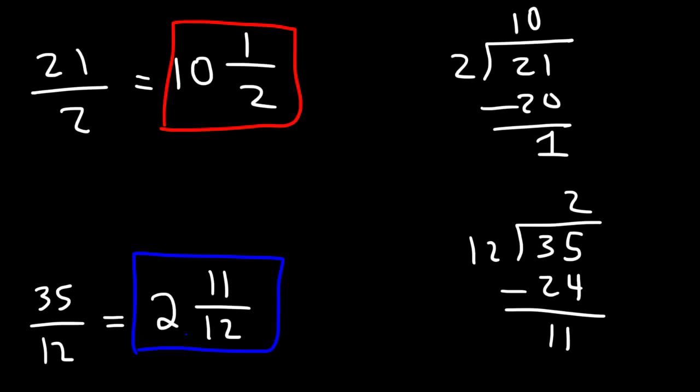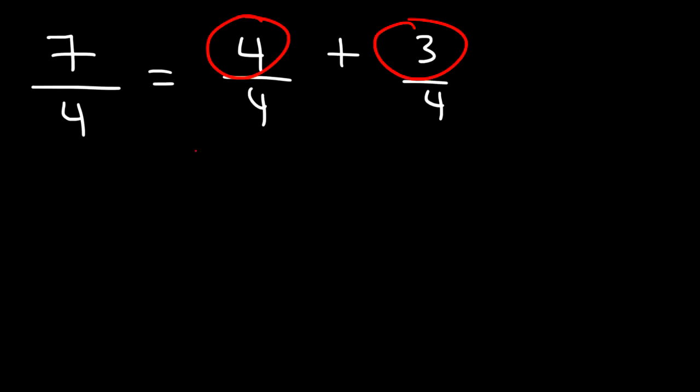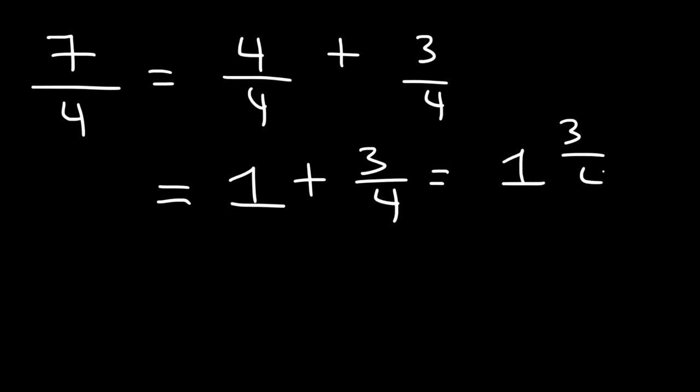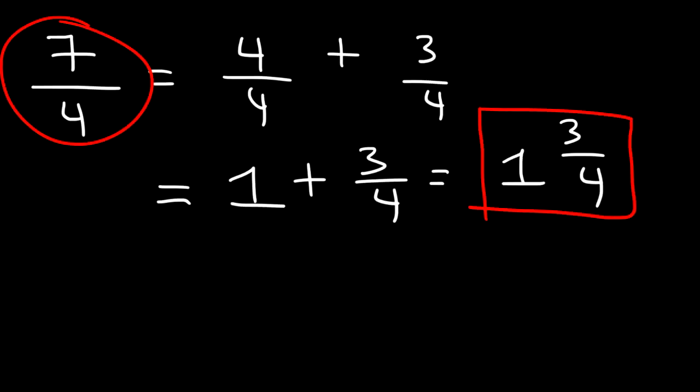Now let's get these same answers using another technique. Let's start with 7 over 4. What I like to do is break down 7 into two numbers, one of which is divisible by 4. So 7 is 4 plus 3. The denominator has to be the same when doing this. We could say that 7 over 4 is basically 4 over 4 plus 3 over 4, because 4 plus 3 is 7. Next, divide. 4 over 4 is 1. So we have 1 plus 3 fourths, which is the same as 1 and 3 fourths. That is a simple technique in which you can convert an improper fraction into a mixed number.